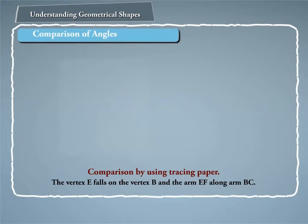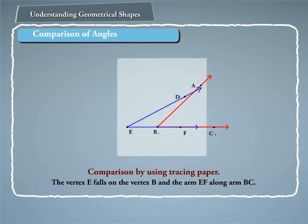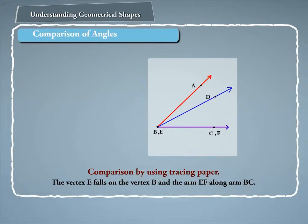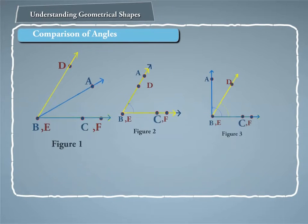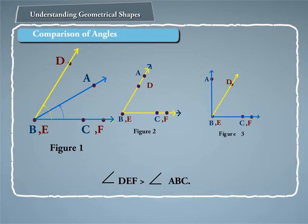Comparison by using tracing paper. Trace one of the angles, say angle DEF, on a tracing paper. Place this traced angle on angle ABC so that the vertex E falls on the vertex B and the arm EF along arm BC. In figure one, it falls beyond BA. So, angle DEF is greater than angle ABC.